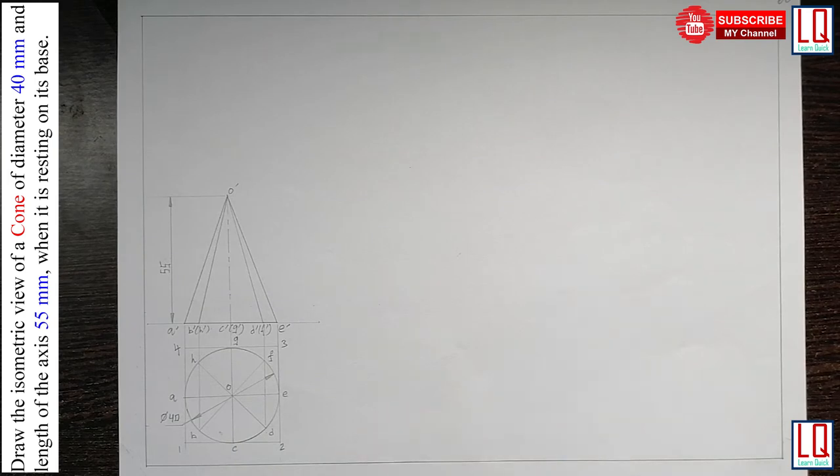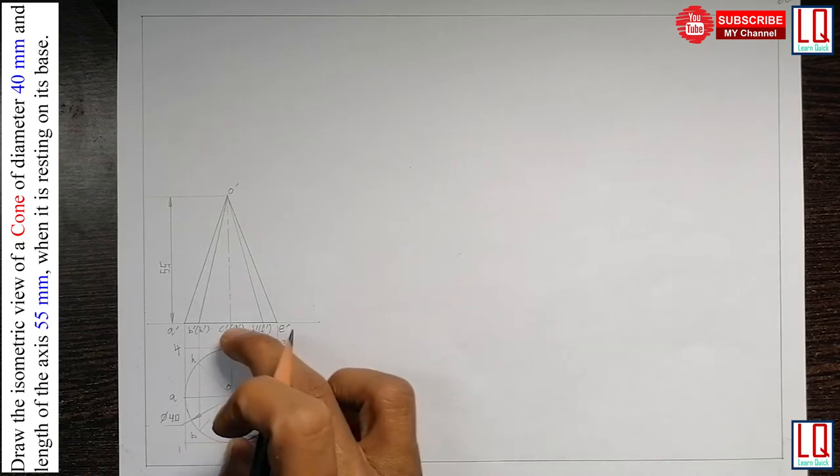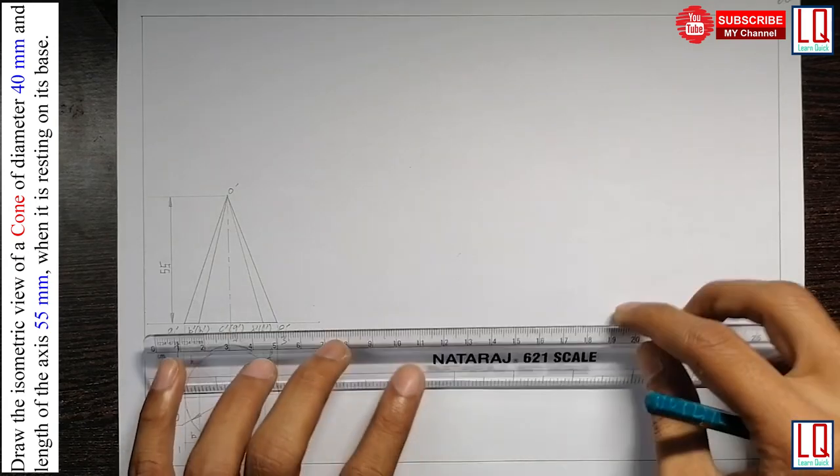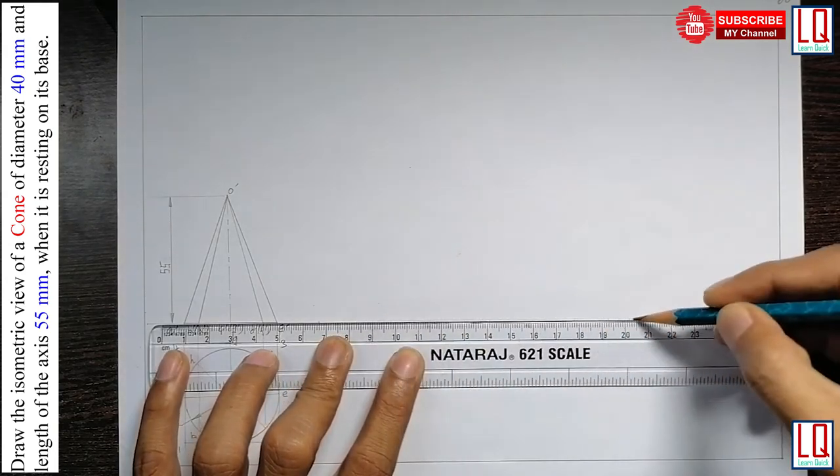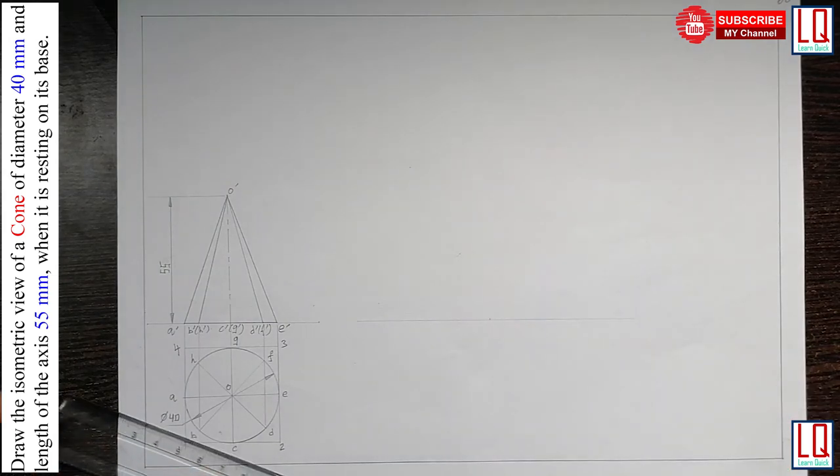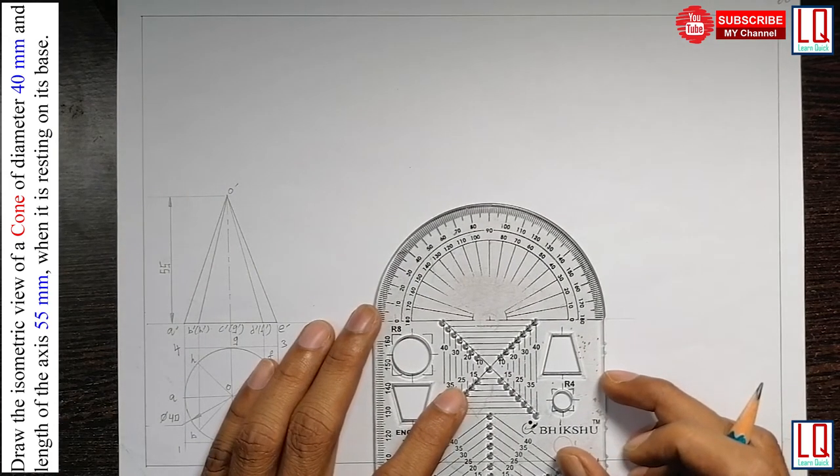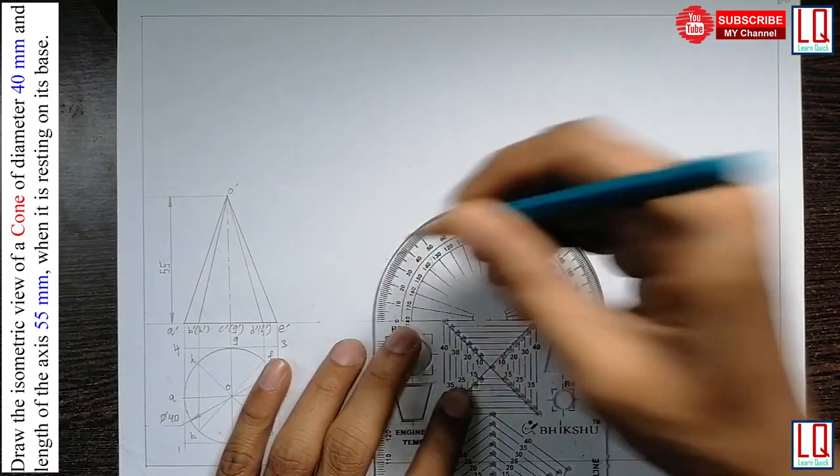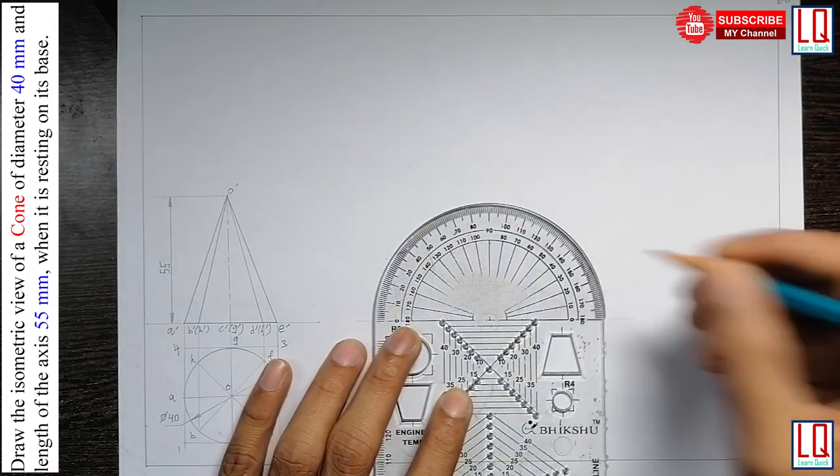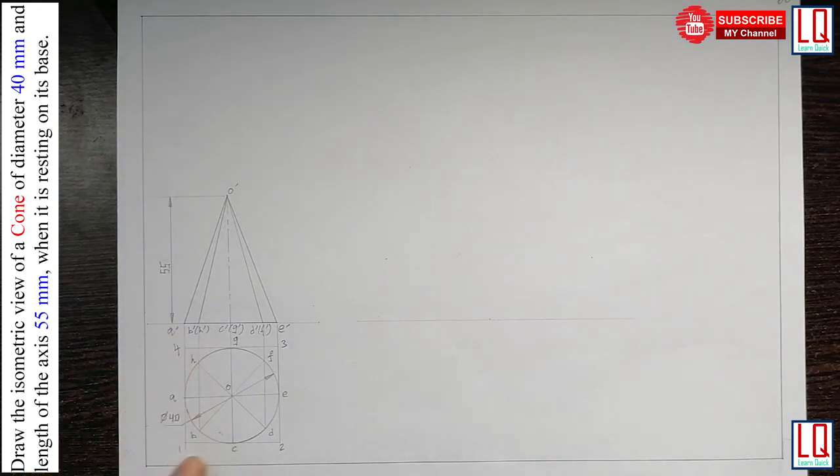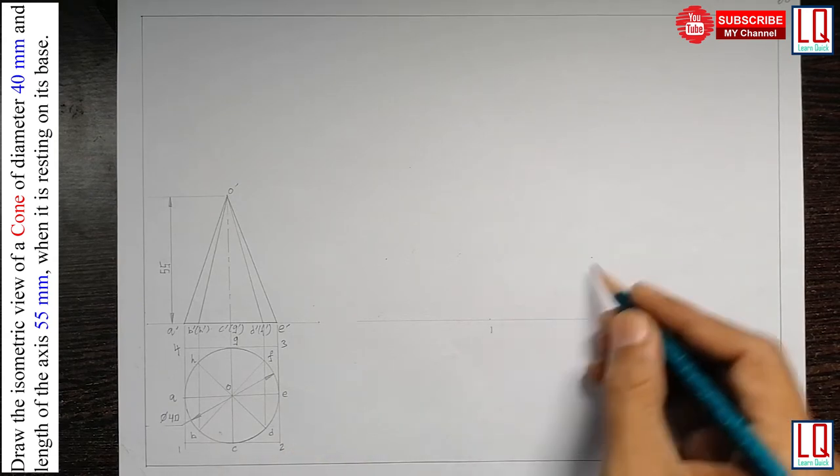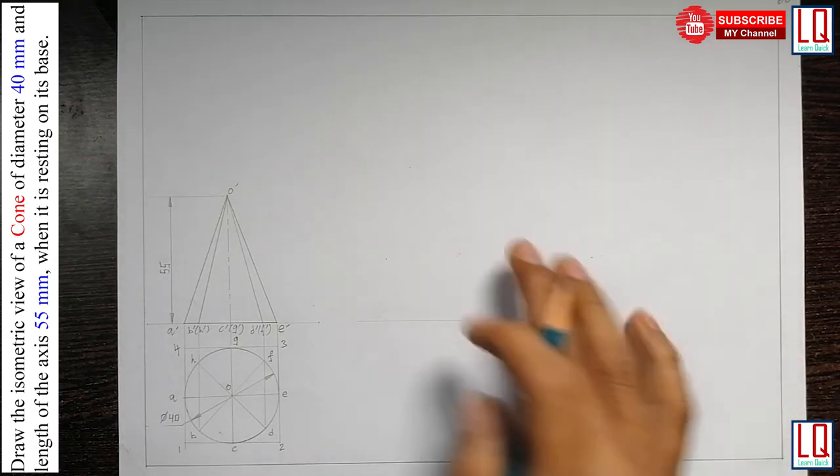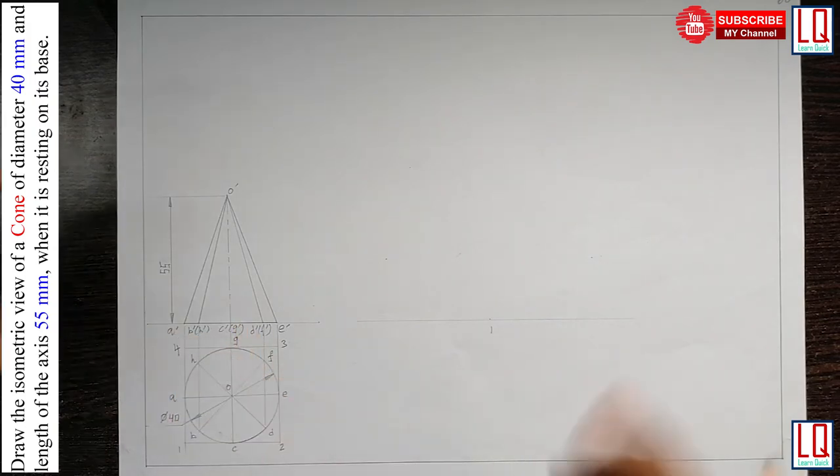Obviously, the length and breadth of this cone is going to be same which is equal to the diameter of the circle. So, now draw a horizontal line and consider a point. Here mark 30 degree in either side and I consider the assumed point as 1 and I am going to draw 1, 2 and 1, 4 here at an angle of 30 degree. If I measure it is going to be 40 mm.